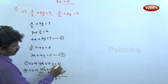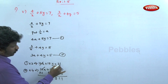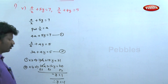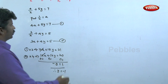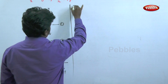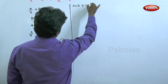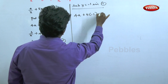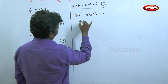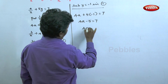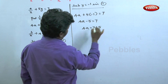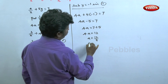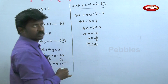So minus y is equal to 21 minus 20, which is 1. Therefore y is equal to minus 1. Substituting y equals minus 1 into equation 1: 4a plus 5 into minus 1 is equal to 7. So 4a minus 5 is equal to 7, giving 4a equal to 12, therefore a is equal to 3.